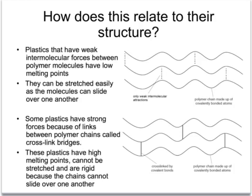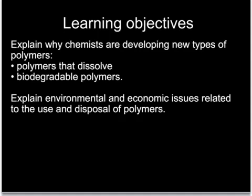It's also worth noting that the flexible polymers have got low melting points and can easily be melted and changed into different shapes. For example, if you were to put your biro into a Bunsen burner at school it would melt and then reform as it cools into a new shape, just as rigid as it was before. Whereas the second type of plastic — for example the formica worktop at home — will not melt if you put a hot pan on it, but it may char.